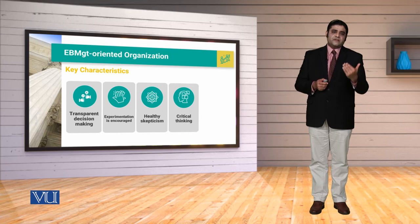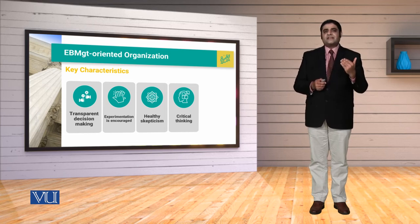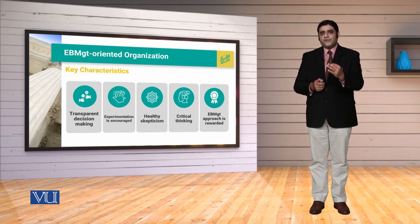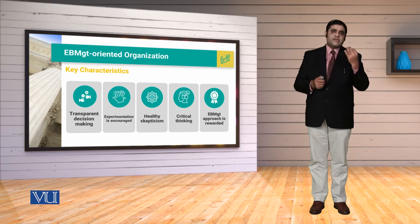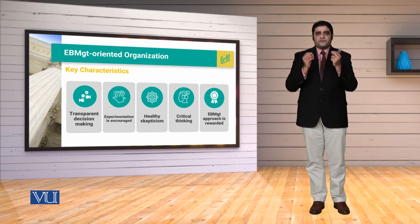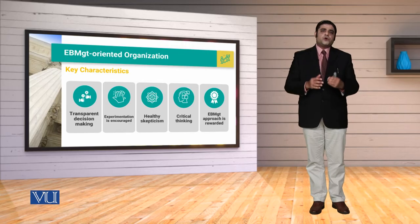The fourth key characteristic of evidence-based management is critical thinking — چیزوں کو ہم تنقیدی جائزے کے ساتھ لے کر چلیں، فیصلوں کو بھی، innovation کو بھی اور اپنے problems کو بھی۔ The fifth thing is that evidence should be rewarded — اگر کسی کے بتائے ہوئے evidence سے ہمارے مسائل حل ہوتے ہیں تو ہم اسے appropriately reward کریں تاکہ motivation کی فضا create ہو سکے۔